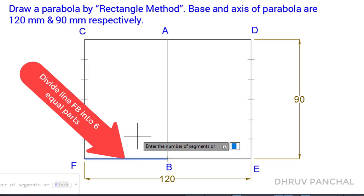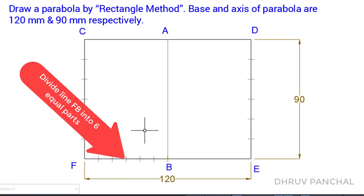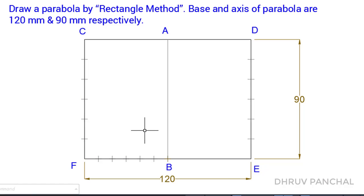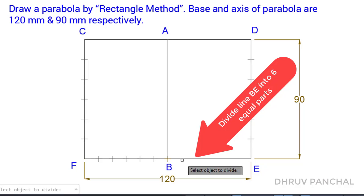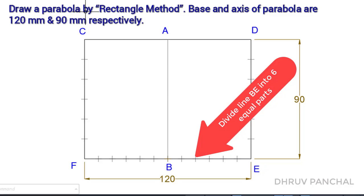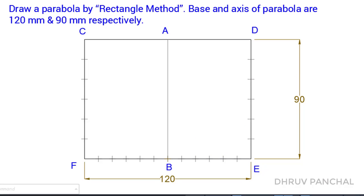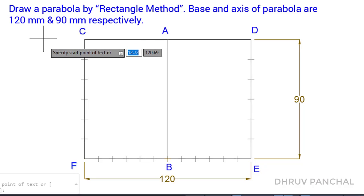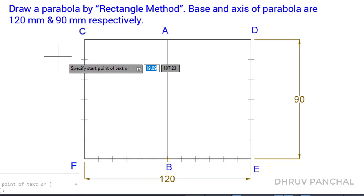Now, divide line FB into six equal parts. Also, divide line BE into six equal parts. As we know that the dimension of both lines is 60 mm, the dimension of one division will be 10 mm.